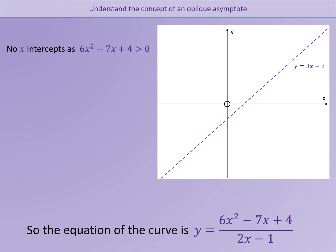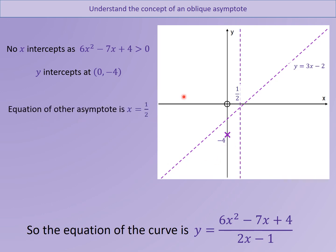There's our oblique asymptote plotted. There are no x intercepts because 6x squared minus 7x plus 4 can't equal zero — it has no real roots. It has got a y intercept at (0, minus 4): 4 over minus 1. I also know it's got an asymptote at x equals a half. So I'm guessing the equation is going to approach the asymptote like this on each side. But I need to know where it turns — where the stationary point is — to plot it accurately.